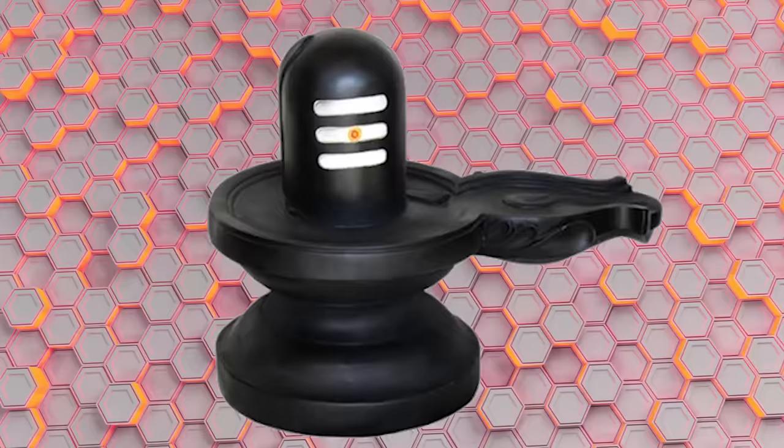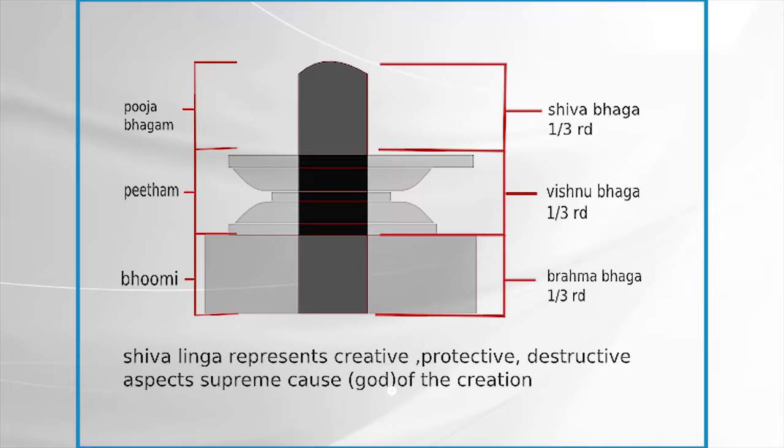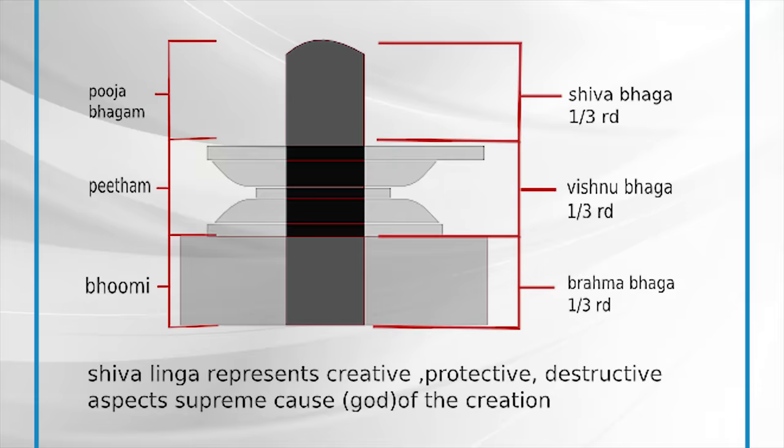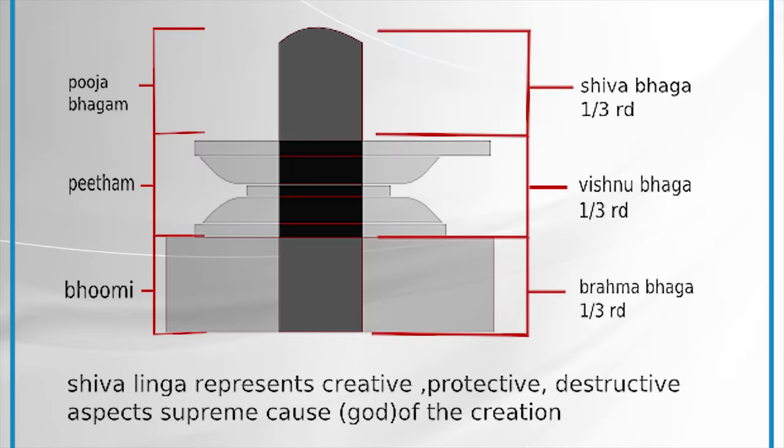This symbol we call Shivling has a scientific explanation. Shivling consists of three parts: the bottom, which has four sides, remains underground; the middle part, which has eight sides, remains on a pedestal; and the top, which is actually worshipped, is round. The height of the round part is one-third of its circumference. The three parts symbolize Lord Brahma in the lower part, Lord Vishnu in the middle, and Lord Shiva in the upper part.